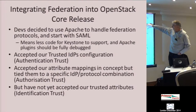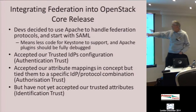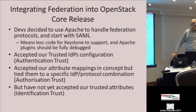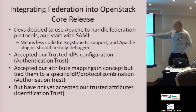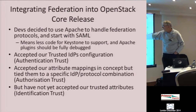When we started pushing it through the core release, they made a strategic change — they didn't want it as a plugin anymore, they wanted to use Apache as a front-end to OpenStack. This meant less code for them to support: sticking all the federation as Apache plugins means they don't have to do anything inside Keystone, and the Apache code should be more debugged due to its larger user community.